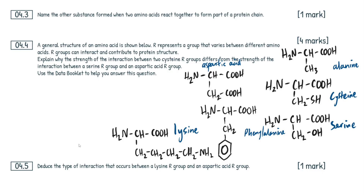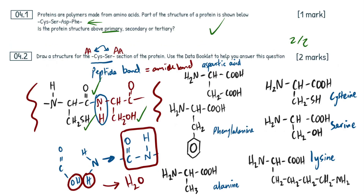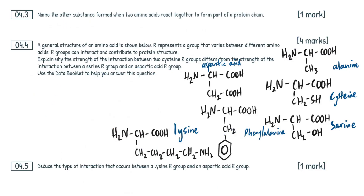Question 4.3: Name the other substance formed when two amino acids react together to form part of a protein chain. Super easy one mark. Going back to how we form an amide or peptide bond — we said H2O is eliminated. So the answer is water. That's your one mark answer and it's always going to be water regardless of which amino acids are reacting. AQA allow H2O, but that's a chemical formula not a name, so stick with water.